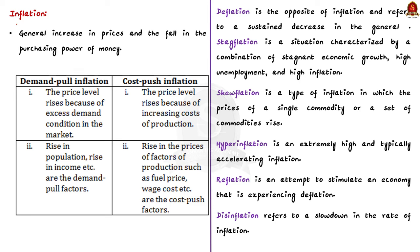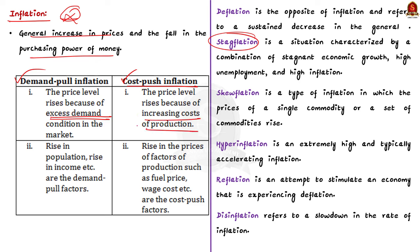Our next topic is inflation. Recently, an RBI notice mentioned the risk of stagflation. Inflation refers to a general increase in prices and the fall in the purchasing power of money. There are two types: demand-pull inflation, caused by an increase in consumer demand that outpaces supply, and cost-push inflation, caused by an increase in production costs such as wages or raw material costs, which leads to higher price levels.